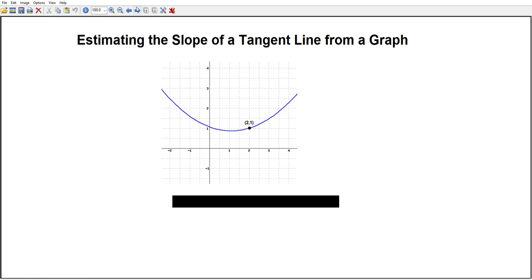Now, the way that we're going to estimate the slope of the tangent line is by drawing a tangent line to the graph using a straight edge pictured below.